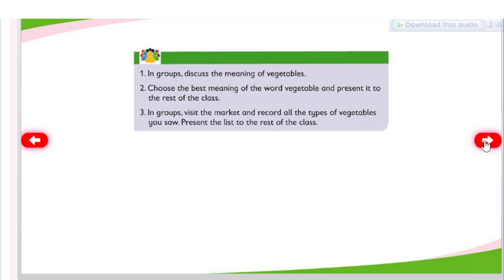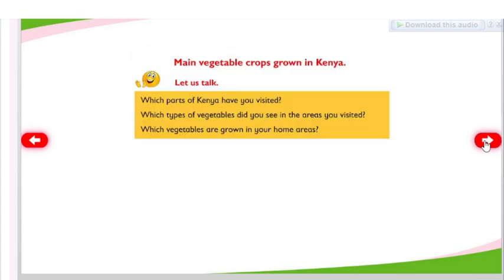In groups, visit the market and record all the types of vegetables you saw. Present the list to the rest of the class. Main vegetable crops grown in Kenya — which parts of Kenya have you visited? Which types of vegetables did you see in the areas you visited? Which vegetables are grown in your home areas?